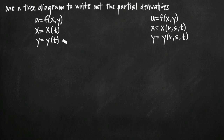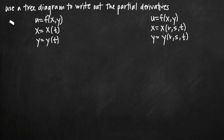So let's look at two different examples. The first one is on the left. We've been given three functions — one for u, one for x, and one for y. We've been told that u is in terms of x and y, that x is in terms of t, and y is also in terms of t. This is called a Case 1 type partial derivative or multivariable function.